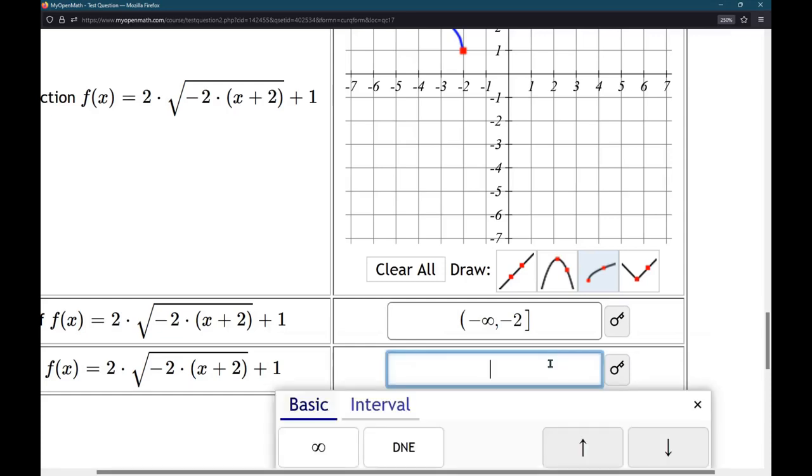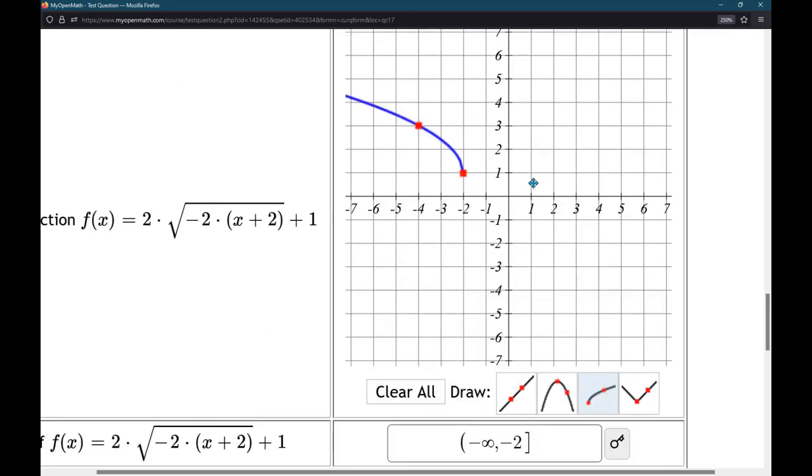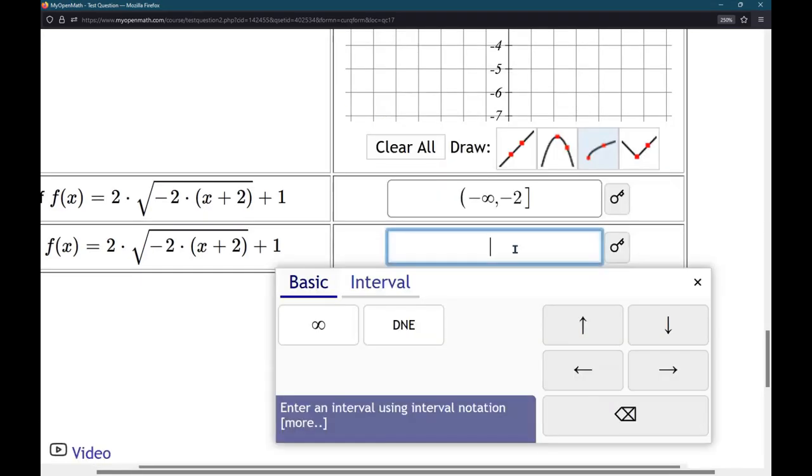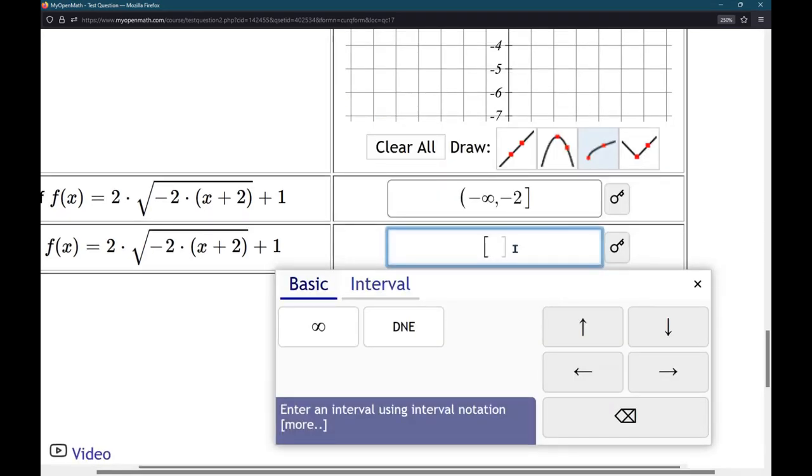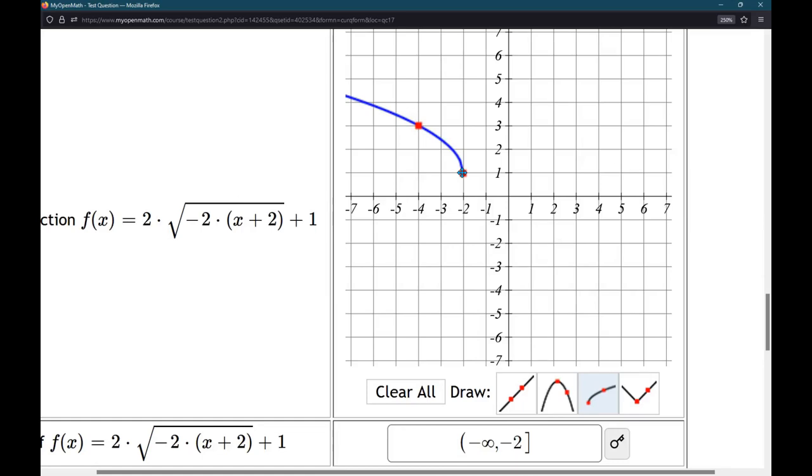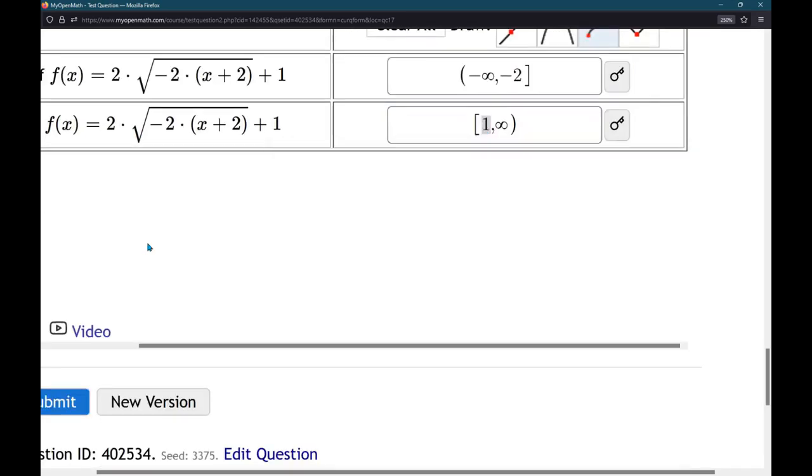All right. Range is the y-value. So, it's everything 1. 1 is the smallest y-value and up. So, it's positive 1 to infinity. And we're including positive 1 because that point is on the graph, just like we're including negative 2 because this negative 2 x value is on the graph. All right. Now, we're going to hit submit.